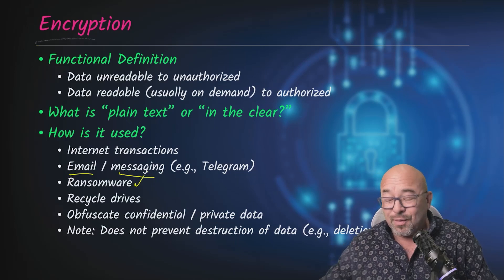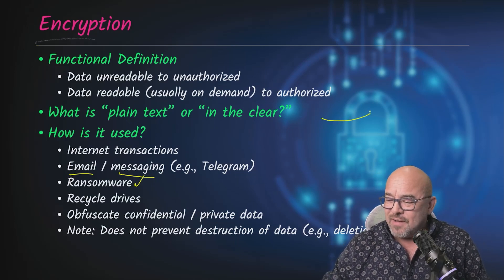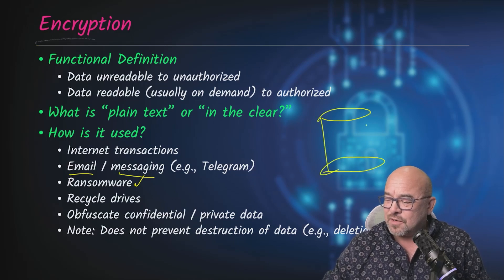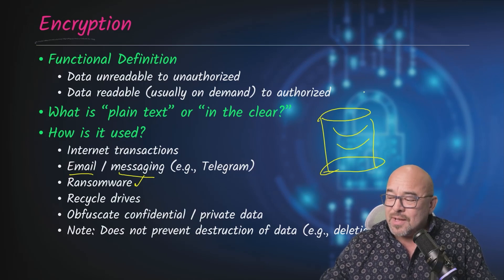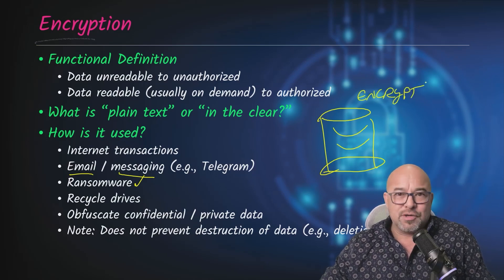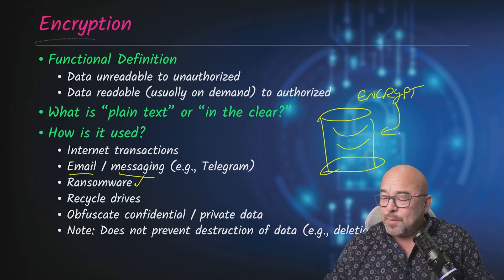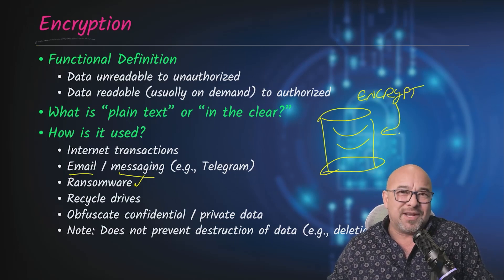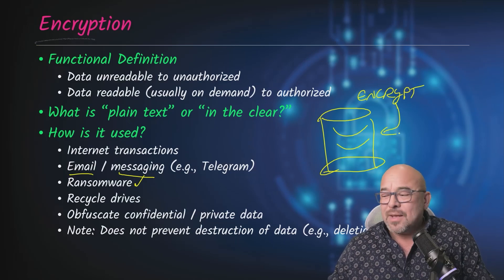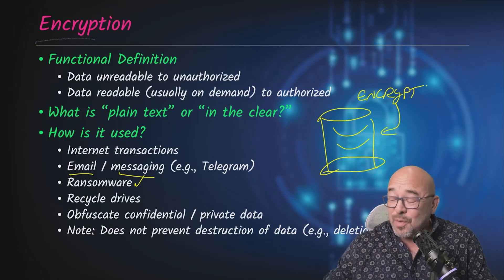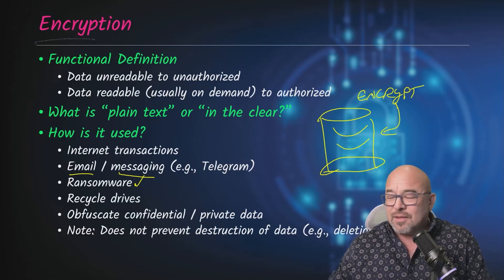Another thing that could be using encryption would be ransomware. The basic idea is, let's say you have a big file server with all kinds of data on it. With ransomware, they will encrypt it — usually once they get control they can encrypt certain files and folders or the entire hard drive. The only way to get it decrypted is usually to pay some amount of cryptocurrency, probably Bitcoin, which could amount to millions of dollars. When you do that, they promise to give you the decryption key to decrypt that hard drive.